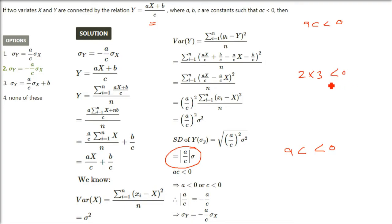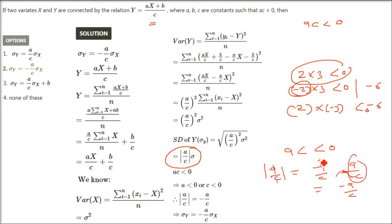Let's assume a is 2 and c is 3. ac less than 0 is only possible when either one is negative: minus 2 times 3 equals minus 6, which is less than 0, or 2 times minus 3 equals minus 6. So modulus of a/c, when a times c is less than 0, becomes minus a/c. Therefore sigma y equals minus (a/c) times sigma x. The answer is the second MCQ option.